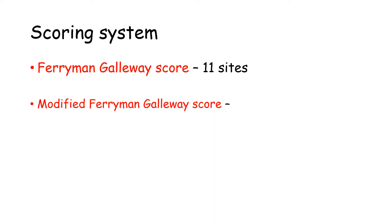Now let's look at the scoring system used for hirsutism. The scoring system used is the Ferriman-Gallwey score, which assesses the presence of sexual hairs on 11 sites. This score has been modified — known as the modified Ferriman-Gallwey score — in which only 9 sites are considered, with 2 sites removed from the original: the leg and the forearm.